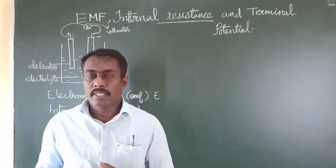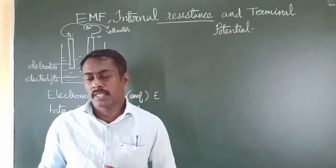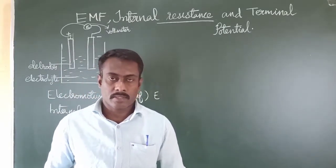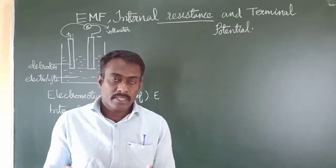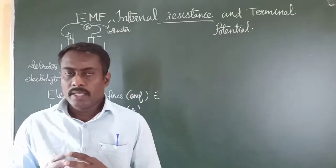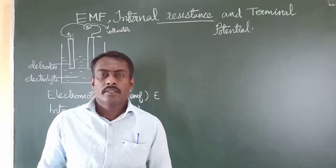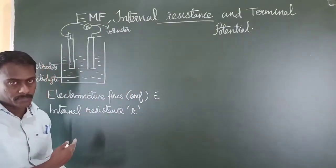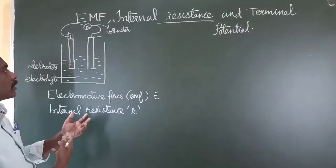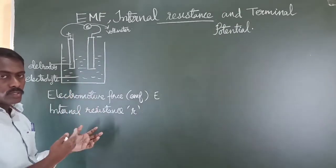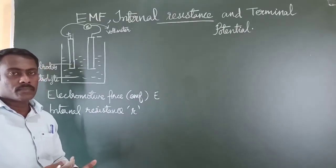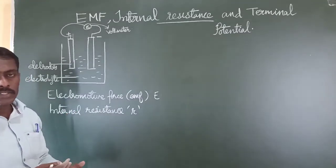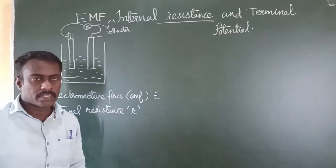The second factor is the temperature of the cell — the temperature of components like the electrodes or electrolyte. If the temperature is high, then the movement of electrons or the flow of electric current through the circuit will be easier. Increasing the temperature of the electrolyte and the electrodes makes it easier for electric current to flow through them. Therefore, if the temperature is high, the internal resistance of the cell will be less.